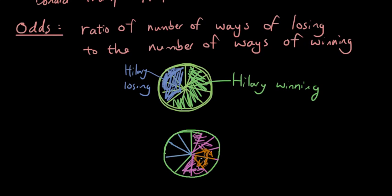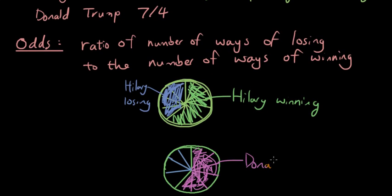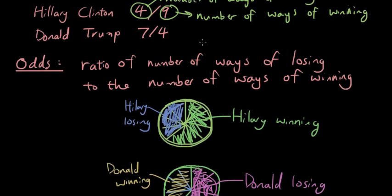These slices represent Donald losing. And four slices represent Donald winning. So I should probably label that here.